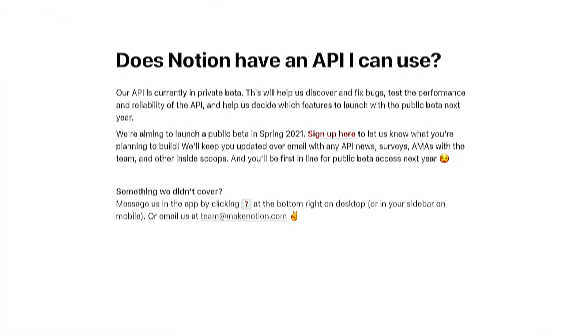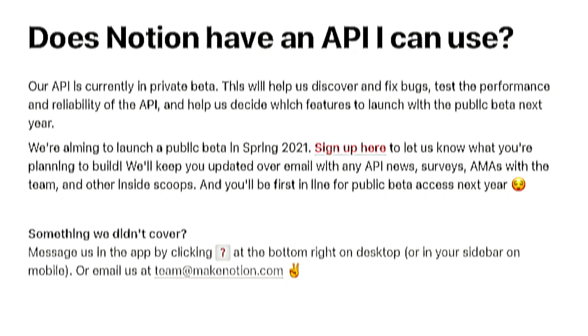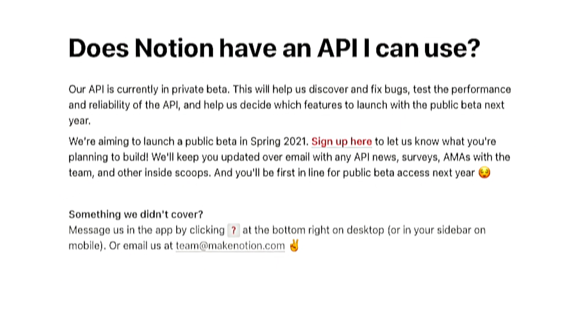So when are the APIs really coming? Notion's APIs are currently in private beta to cover bug fixes, testing, performance, and reliability. Results will dictate which features make it to the public beta in time. Based on Notion HQ's announcement, the API public beta is likely to be launched around spring of 2021 — that's March to May 31st in the US context — and one can expect the public launch to be around the summer of 2021, June to August.